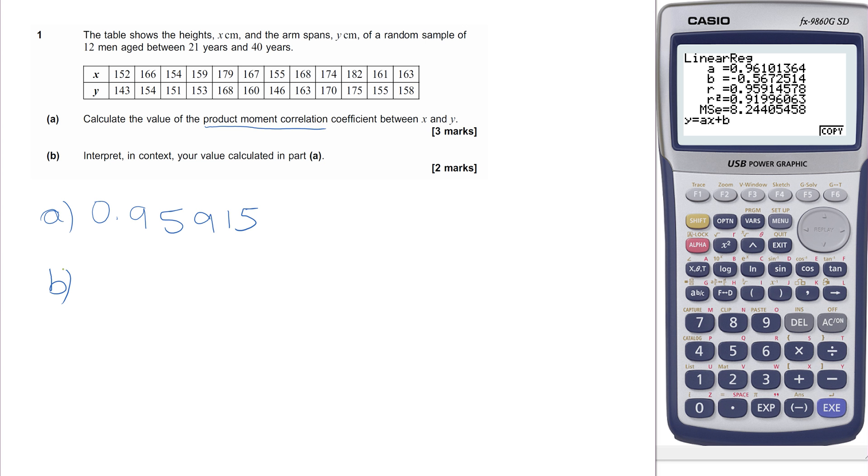For part B, there's two marks here and it's asking us to interpret in context. Outside of context, we would say that this is a strong positive correlation. But that is not a contextual interpretation, that is merely interpretation of R.